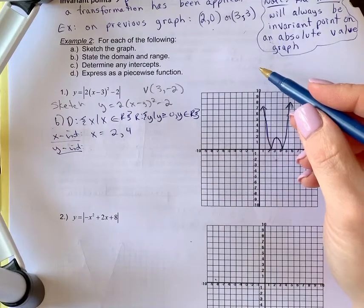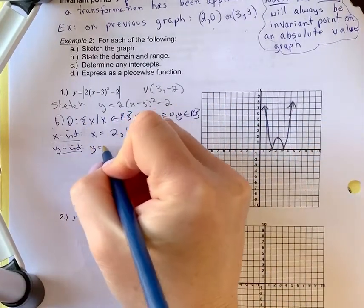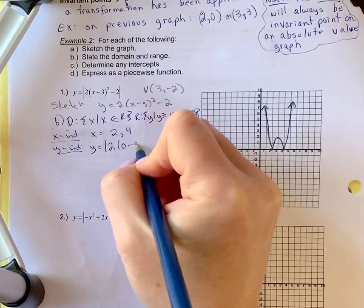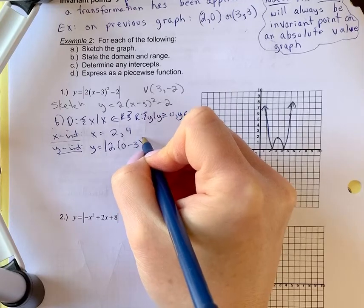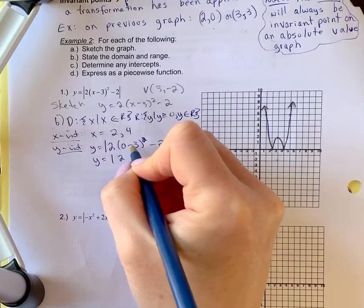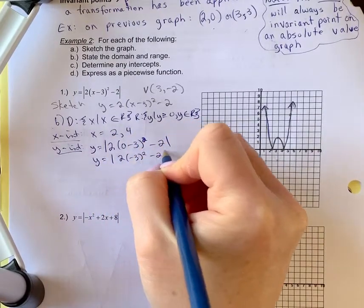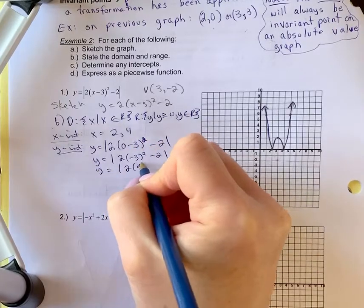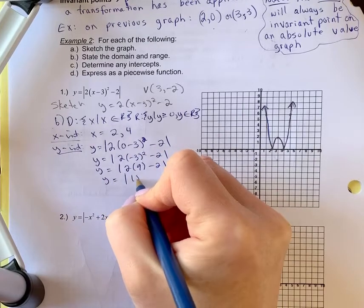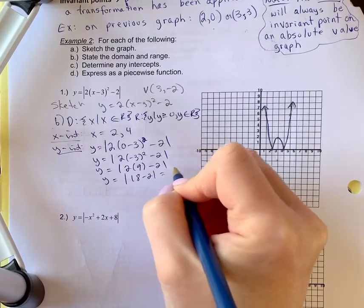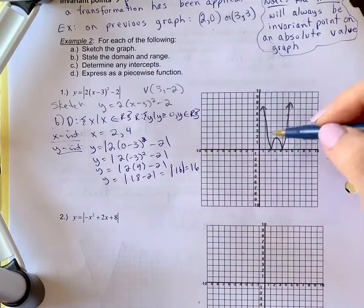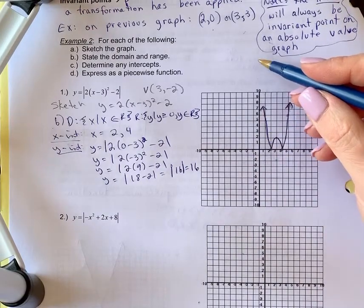So algebraically, I want you to find your y-intercept. And again, it's important to remember when you find your y-intercept, you must include the absolute value brackets in your work. So you're going to put 0 in for x. Remember, we let x equal 0 when we find the y-intercept. So 0 minus 3. So negative 3 squared minus 2. So 2 times 9 minus 2. Y equals the absolute value of 18 minus 2, which equals the absolute value of 16. So when we take the absolute value out, it still remains positive 16. That would make sense over here that my graph would extend up to a positive number.